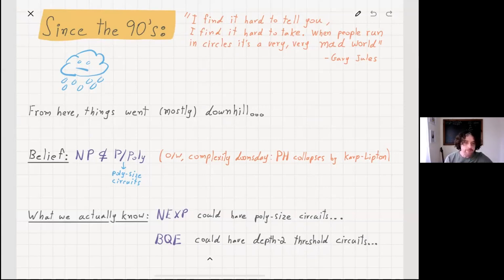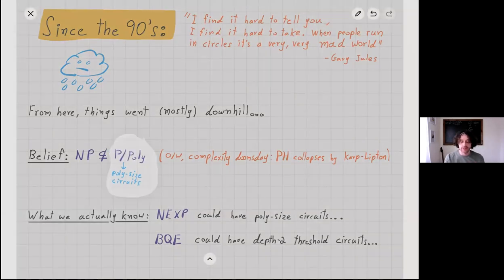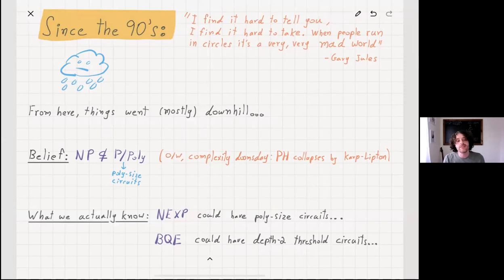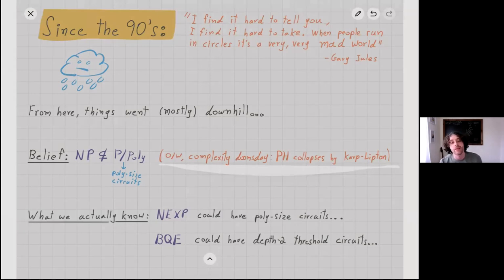To illustrate that, we have this strong belief that NP is not contained in P/poly. P/poly is just the class which represents polynomial-sized circuits. You might say that this is trivial, but exactly because of this non-uniformity, it's not clear at all why this is the case. In fact, we have strong complexity-theoretic evidence: we'll have a full-blown complexity doomsday if we have such an inclusion, because if this happens, the polynomial hierarchy collapses by the Karp-Lipton theorem, and bad things happen.